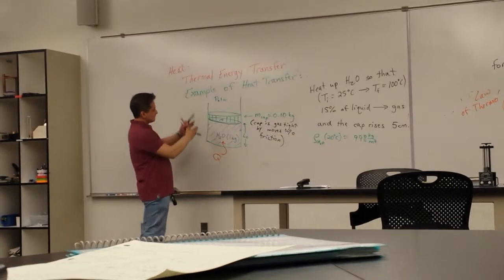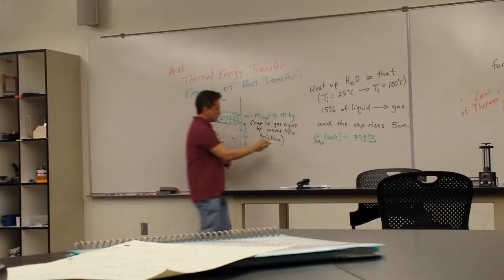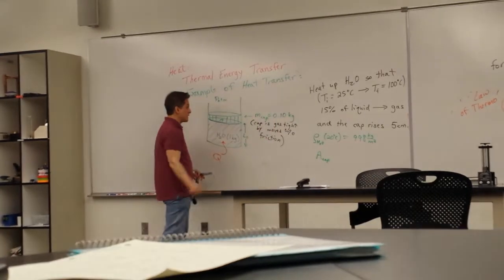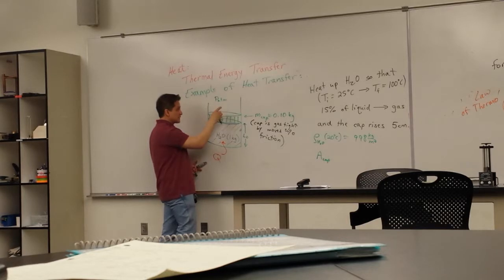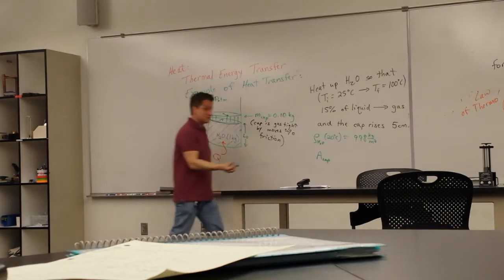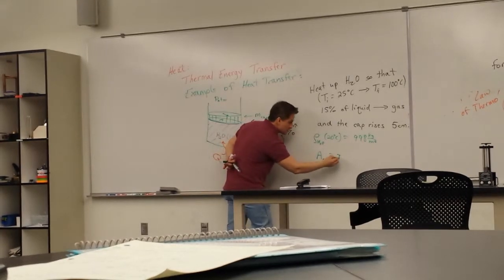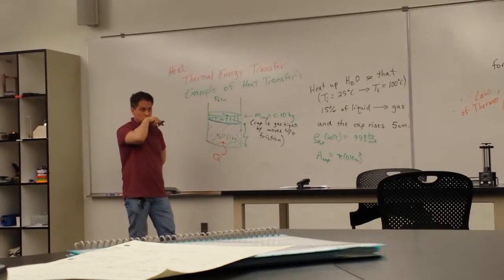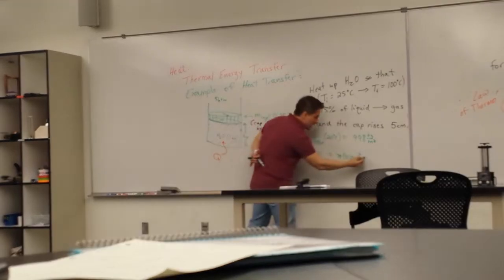And the surface area, the cap is the surface area of this thing is, given a radius of 10 centimeters, 100 over pi or pi over 100, 10 centimeters is 0.1 meter, so about 0.0314 meters squared.